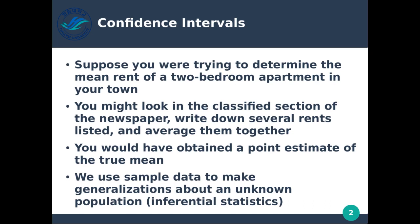What we mean by that is the estimate, or the mean that you've calculated, does not reflect the actual mean of all apartments from the population in your town. You've only taken a sample of the rent values, so your mean will be a little bit off — or sometimes a lot off — from the actual value of all apartments combined. So there is a true mean, and our calculated mean will be slightly off. We want to know how far off we are, and how close we are to the true mean.